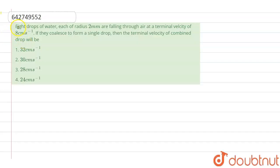In this question, it says that eight drops of water, each of radius 2mm, are falling through air at a terminal velocity of 8 centimeter per second. If they collapse and form a single drop, then what is the terminal velocity of the combined drop?